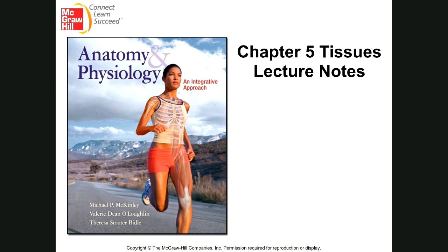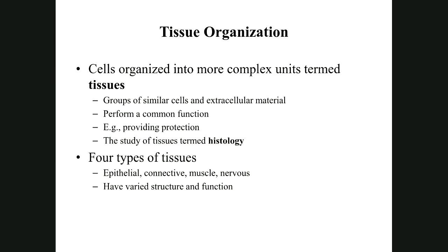A good definition of a tissue is: groups of cells working together for a common function. We can combine different groups of cells working together for a common function — different tissues — and create organs. The term histology: 'hist' refers to tissue and '-ology' is the study of, so histology is the study of tissues.